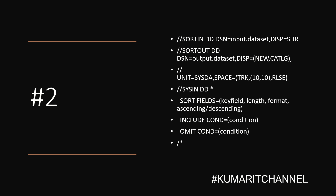Moving to sort card number two. Here you can see an input data set SORTIN and an output data set, and I'm using SORT FIELDS equals key field, length, format, ascending or descending. We are also using the include condition and omit condition. These sort cards are used to include or exclude records from the output based on a specified condition. For example, you could include only records where the account balance is greater than $1,000, and exclude all records where the customer has a negative balance.